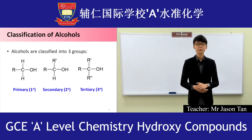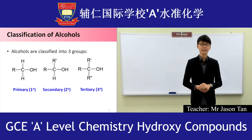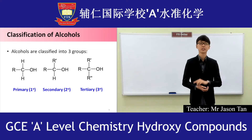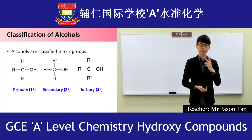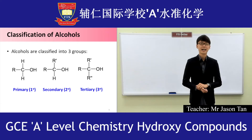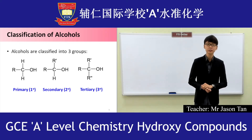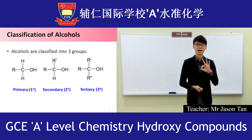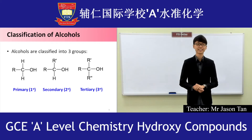Alcohols can be further classified into three different types. The first one is a primary alcohol with only one R group. The second one is a secondary alcohol whereby there are two R groups. And the third one is a tertiary alcohol whereby there are three R groups.